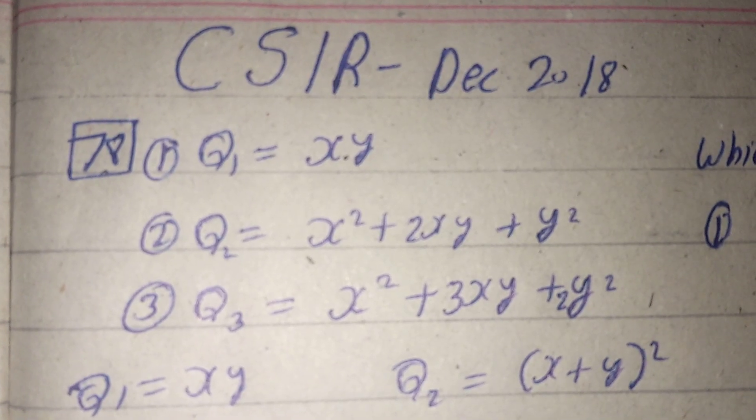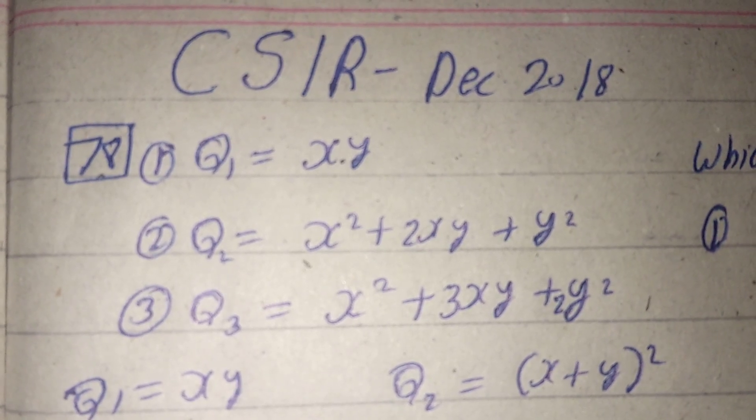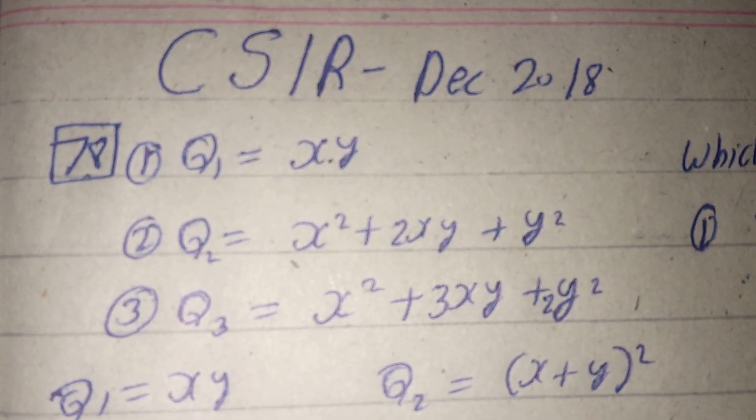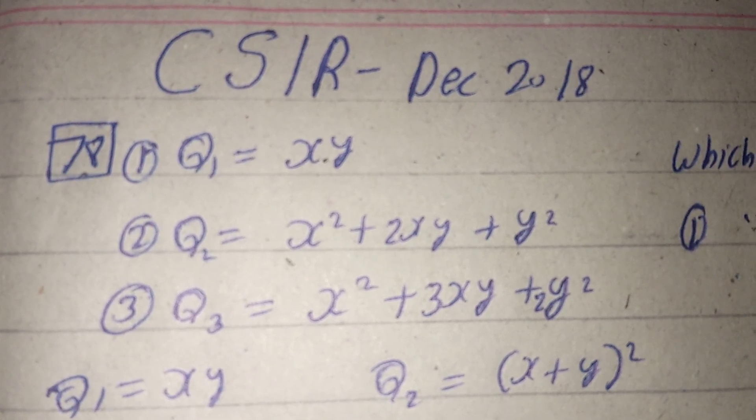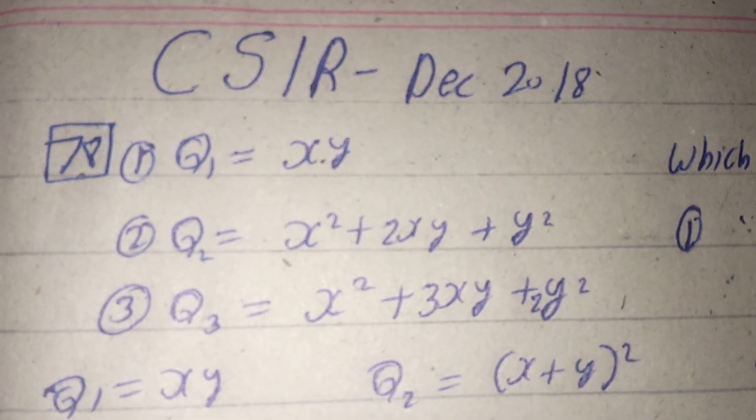From the given three quadratic forms—q1, q2, and q3—q1 is equivalent to q3.